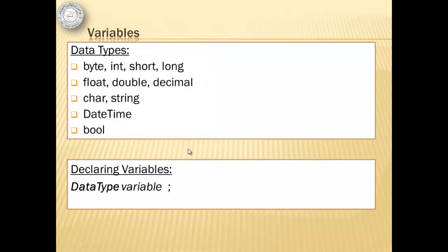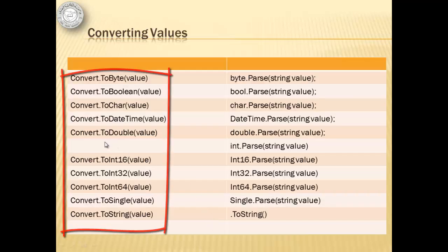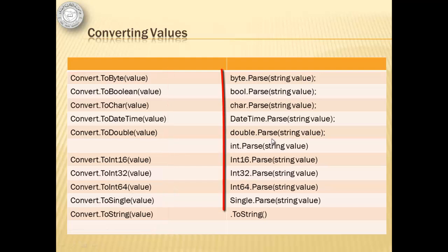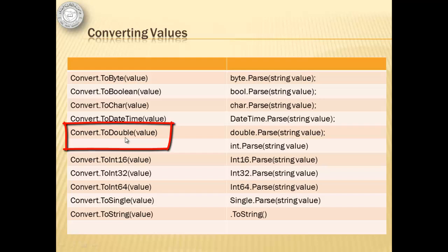To declare a variable, you need to start with the data type followed by the variable name, and it must be terminated by a semicolon. To convert values, we can use the convert method or the parse method. For example, if you want to convert a string value to double, we can use double.Parse(stringValue) or Convert.ToDouble(stringValue).